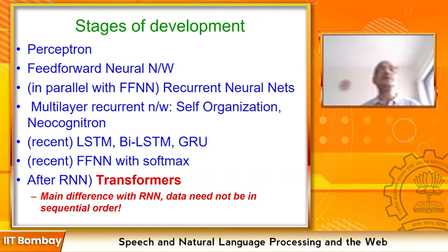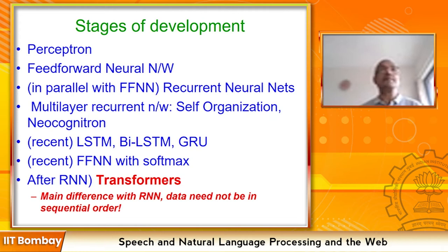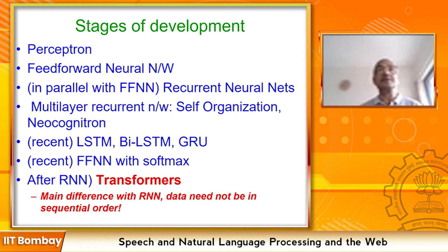Research on eye tracking shows that reading is not purely left-to-right: the eye goes back and forth. Going back is called regression; resting on a word is called fixation. We combined those cognitive studies with machine learning. Transformers are a powerful framework where sequentiality of input need not be maintained.